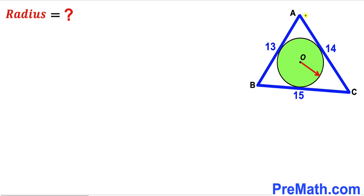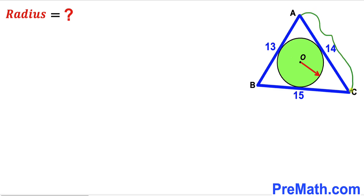Welcome to pre-math. In this video we have got a blue scalene triangle ABC, such that a green shaded circle with center O is fully inscribed in this triangle ABC. The side AB is 13 units, side AC is 14 units, and side BC is 15 units. Our task is to calculate the radius of this green shaded circle.